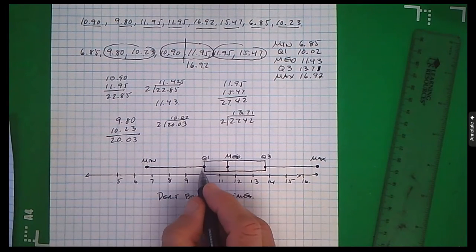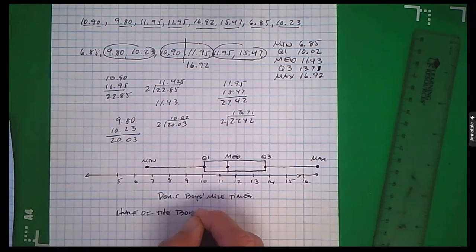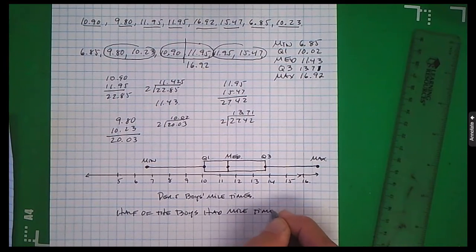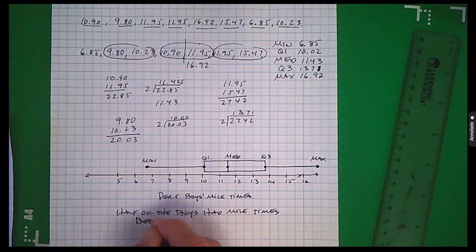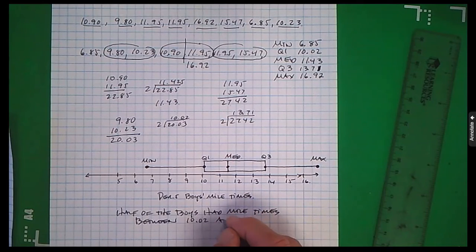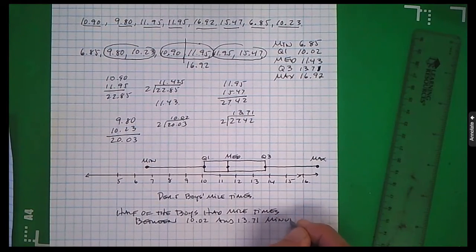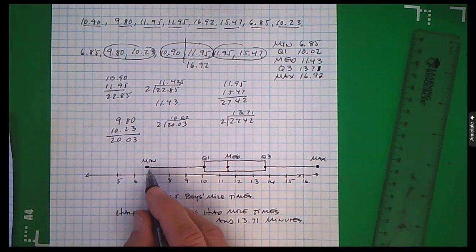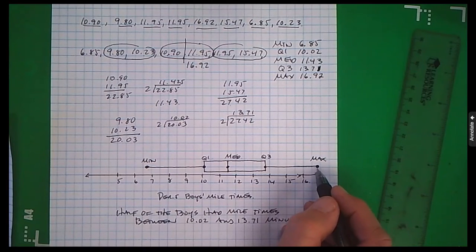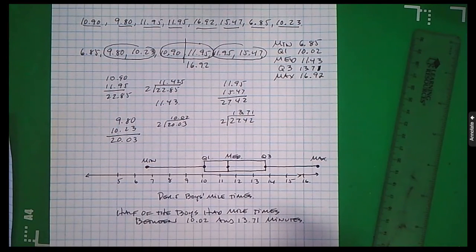This is what it tells me. Half of the boys had mile times between 10.02 and 13.71 minutes. There were some really fast boys as low as 6.85. Some really slow boys as low as 16.92. But half of the boys were in this 10 to 13 range.